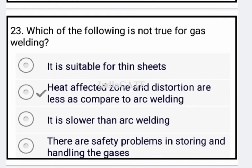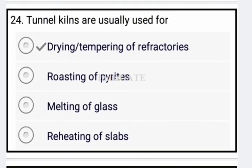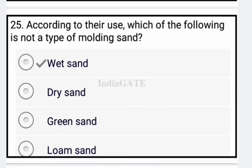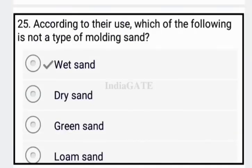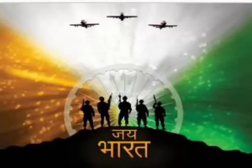Now come to the next question: tunnel kilns are usually used for drying and tempering of refractories — option A is correct. Next question: according to their use, which of the following is not a type of molding sand? Wet sand is not a type of molding sand. This session is now ended. I hope you understand all the questions. If you have any query, please comment. Thank you for watching. Jai Hind, Jai Bharat.